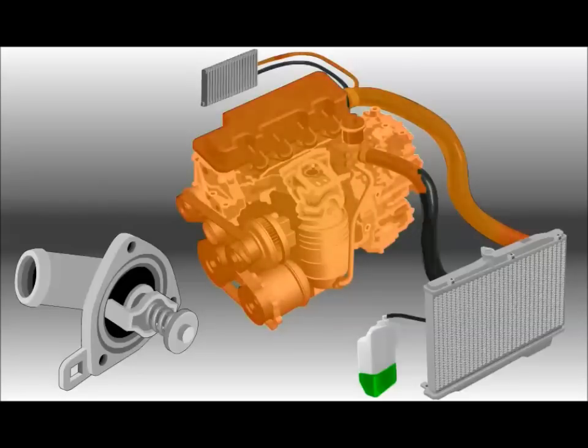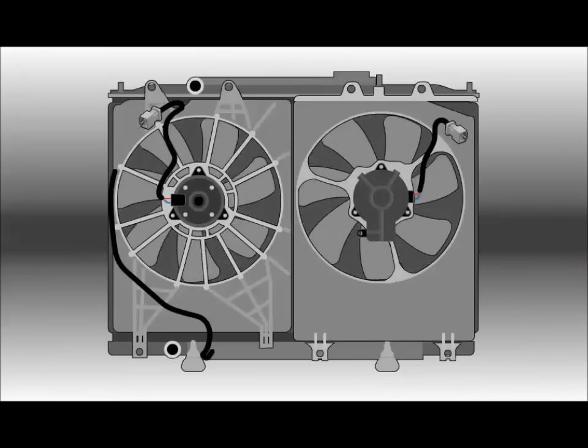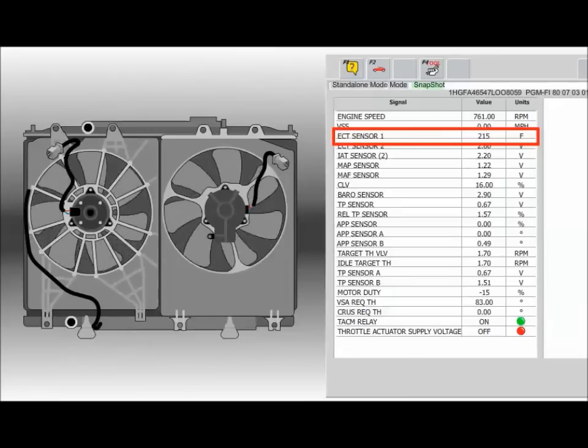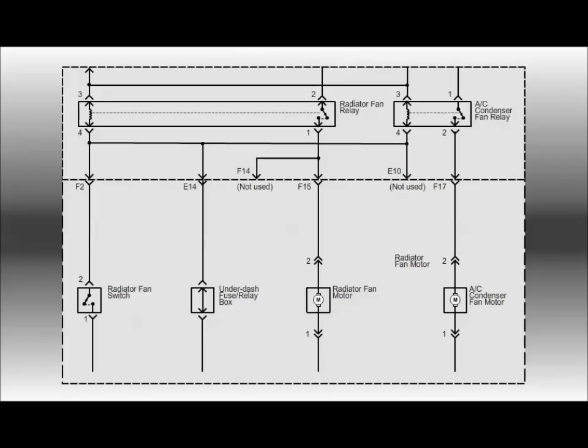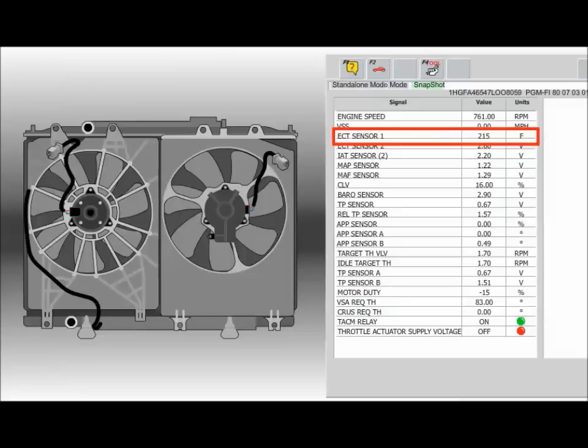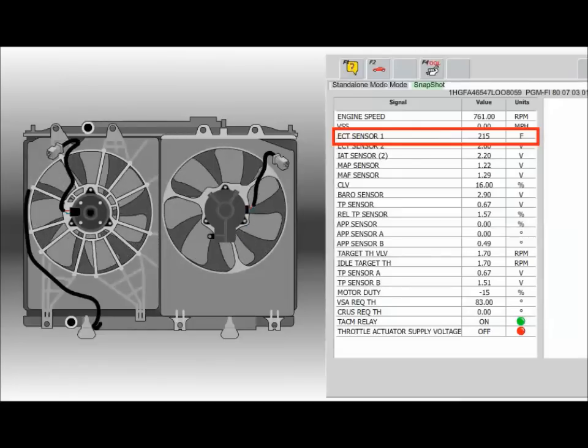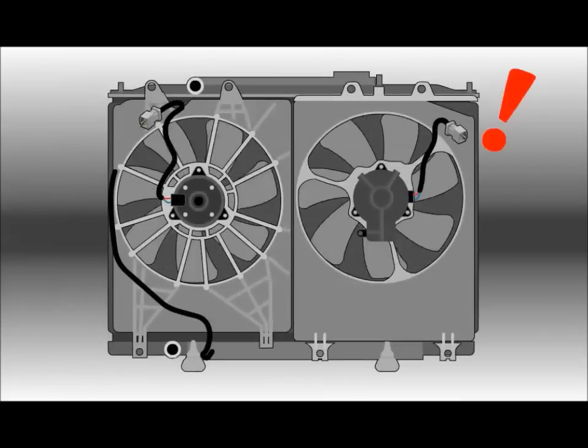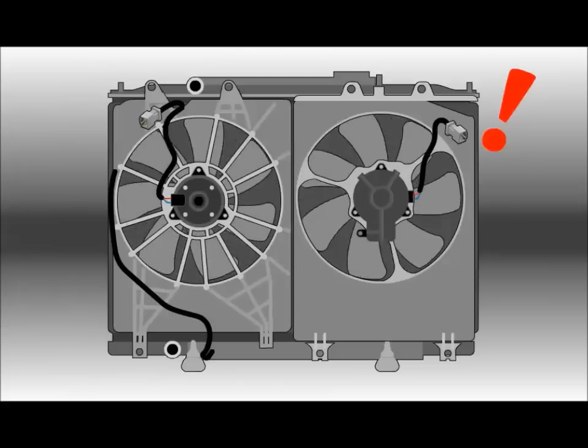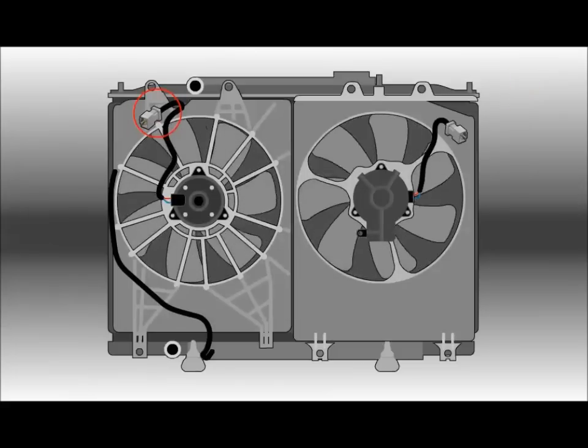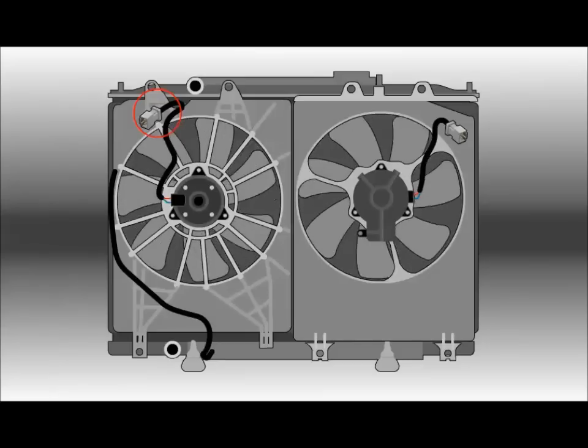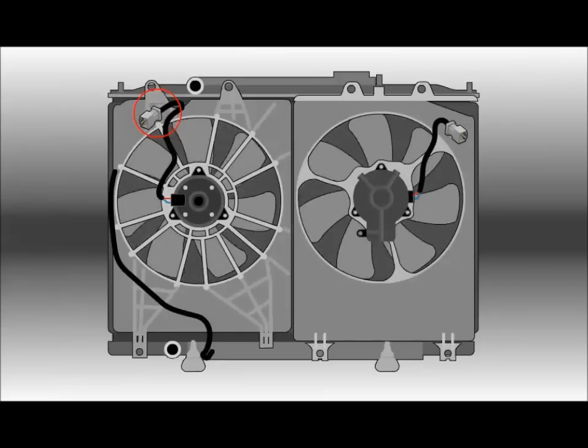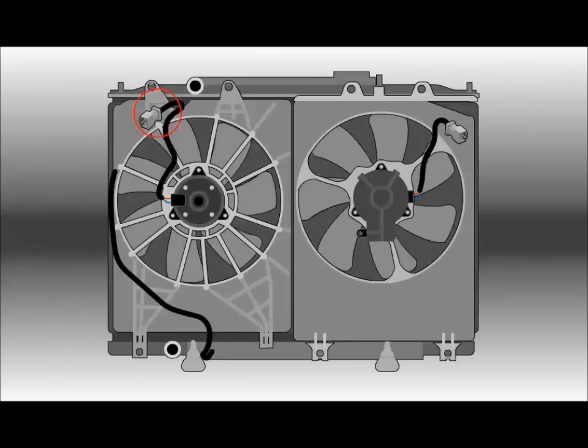If the thermostat opens normally, make sure the fans run to cool the engine. If the engine reaches 210 degrees and the fans do not run, check the fan control circuit. If the fans run but the engine temperature remains high, make sure both fans blow air toward the rear of the car. If a fan blows in the wrong direction, the fan harness is defective. To repair this problem, reverse the leads in the fan connector.